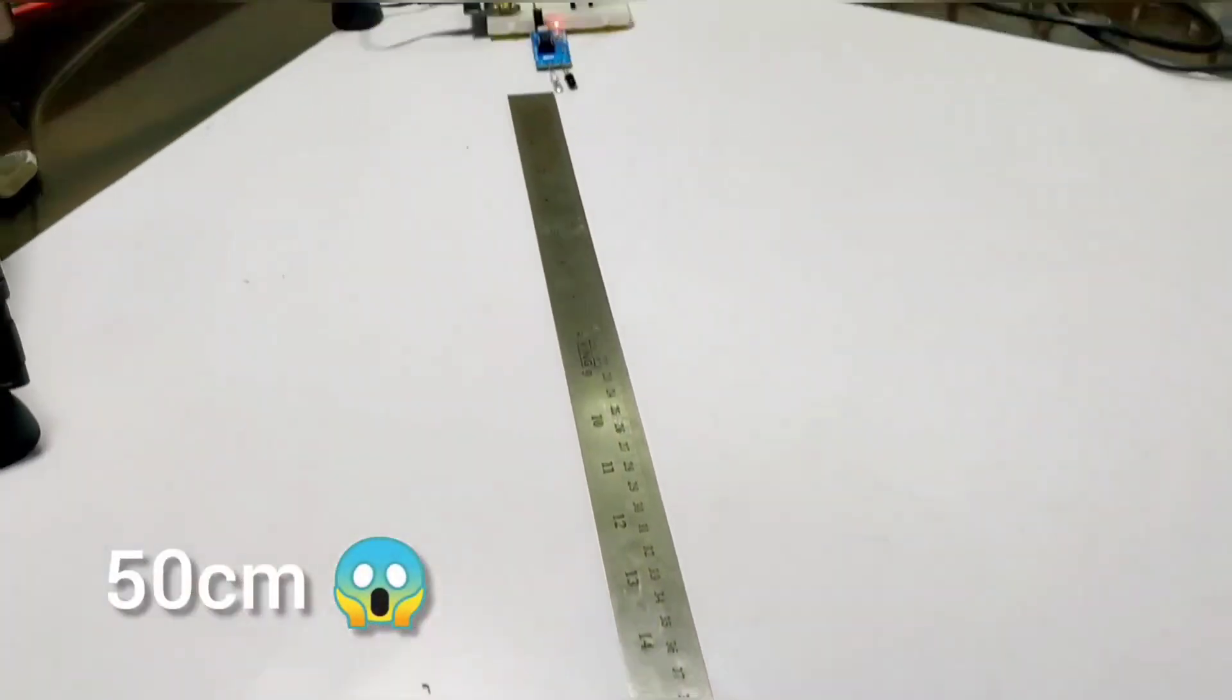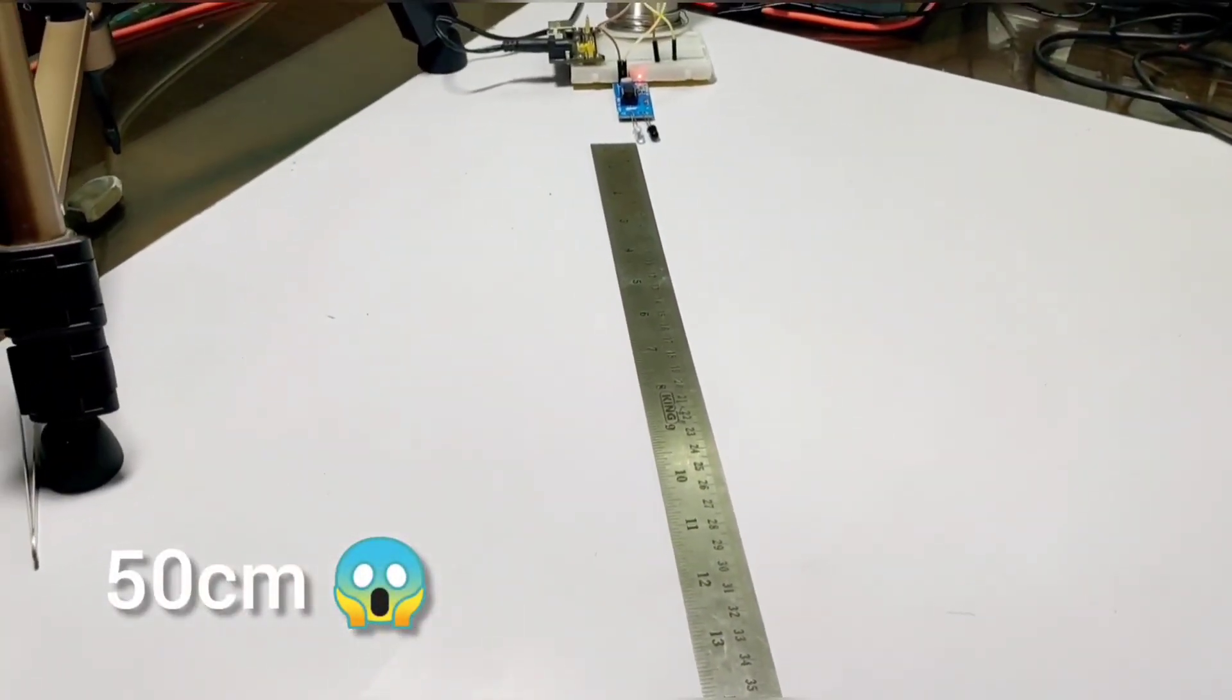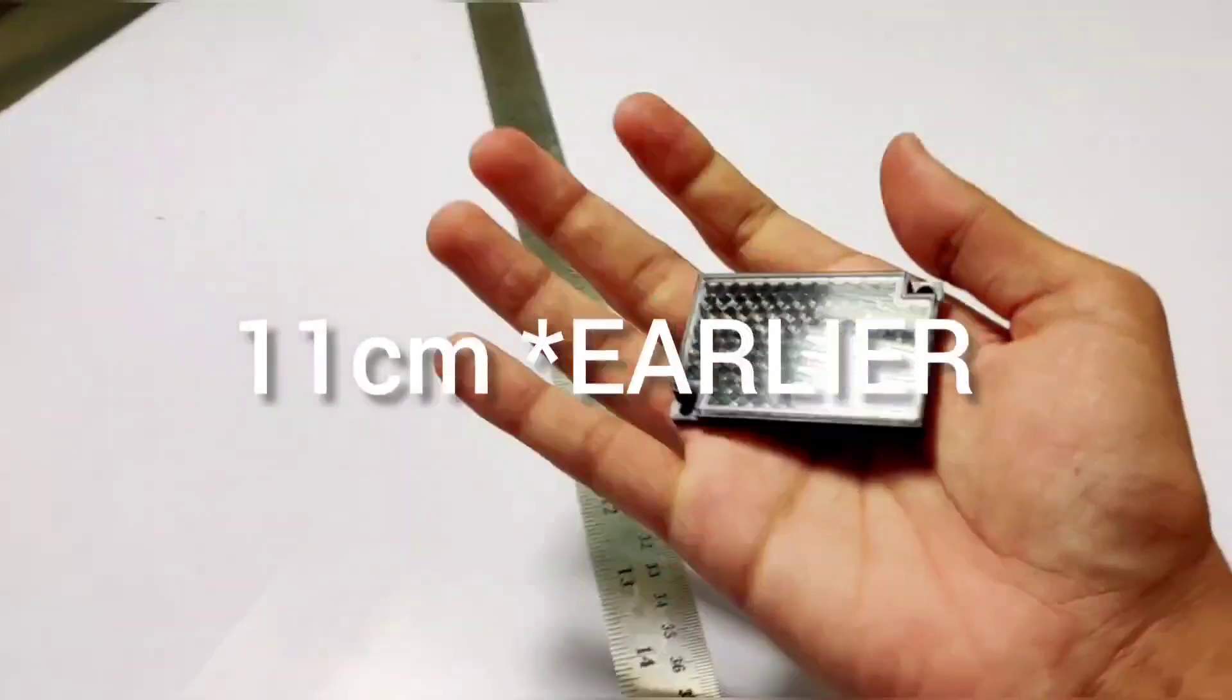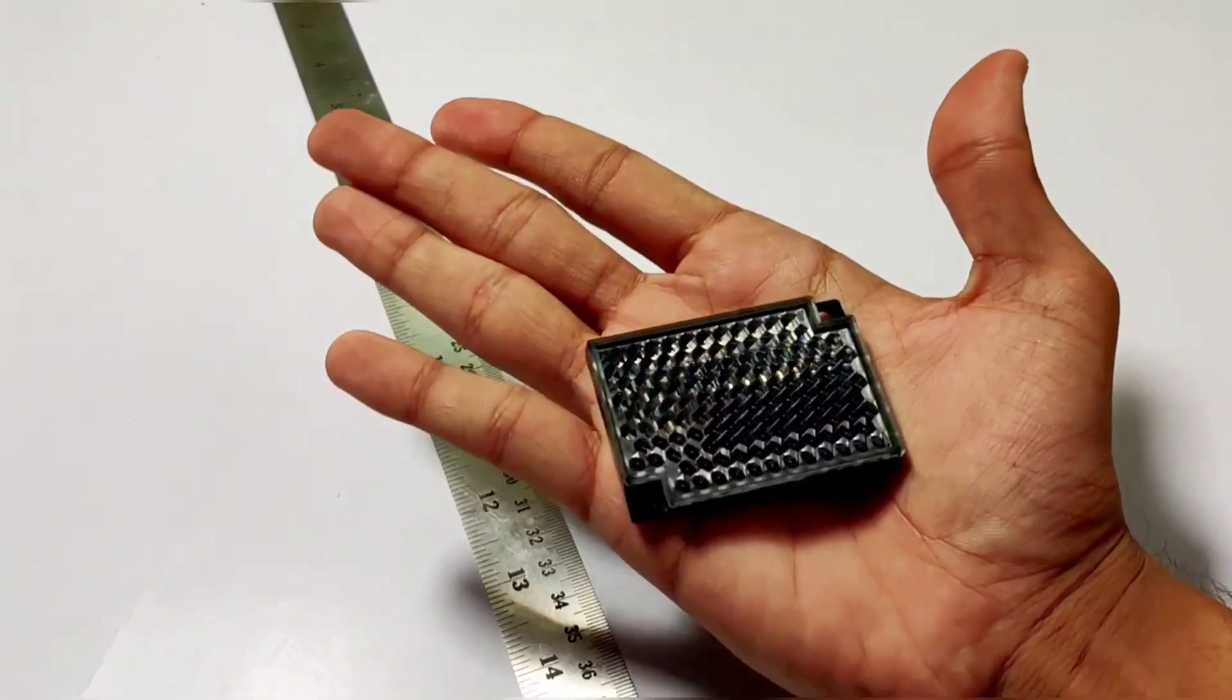Around 50 centimeter, I am able to get the sensing range which was earlier about only 11 centimeter. So you can see the importance of this reflector, how it increases the sensing range.